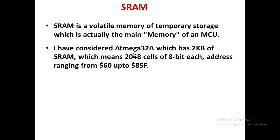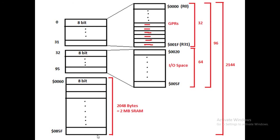The SRAM is volatile memory for temporary storage, which is the main memory of the microcontroller. In ATmega32 we have 2 KB of SRAM, which means 2,048 cells of 8 bits each. The address starts from 0x0060 and goes up to 0x085F — that is 2 KB.